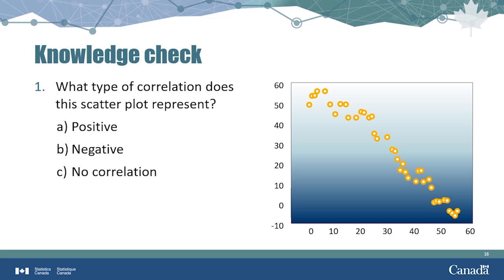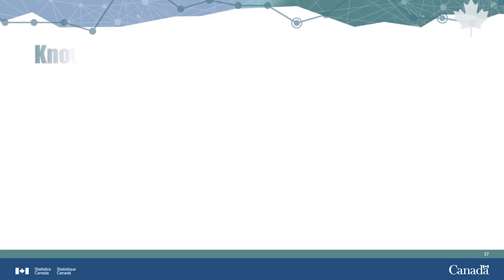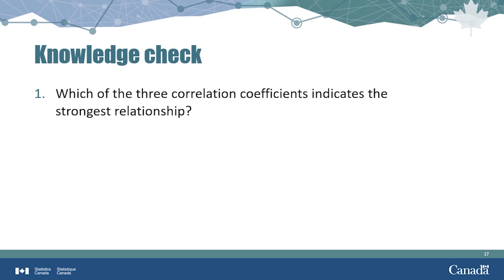The answer is B. This scatterplot is visualizing a strong negative correlation between these two variables. Next, imagine that you are analyzing three pairs of variables. The correlation coefficients for these three pairs are negative 0.8, 0.03, and 0.42. Which r value indicates the strongest relationship? The answer is A, r equals negative 0.8, which indicates a strong negative relationship. The weakest of the three options is B, r equals 0.03, which indicates no relationship between the variables.